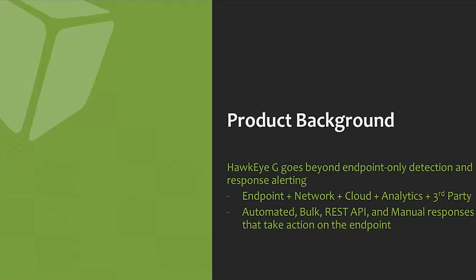Hawkeye G is not just endpoint detection — we're an integrated detection platform with response capabilities that go beyond alerting. The Hawkeye G platform has a real-time endpoint host sensor, a network sensor to look for network activity and indicators of compromise, cloud services for further analysis, behavioral analytics as part of our threat scoring model, and we can bring in third-party indicators from vendors like FireEye and Palo Alto.